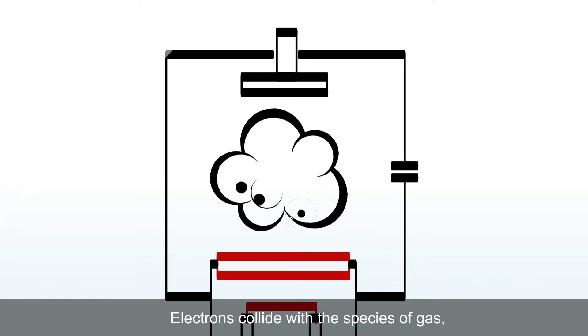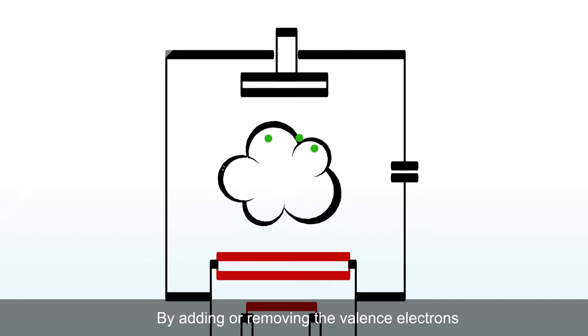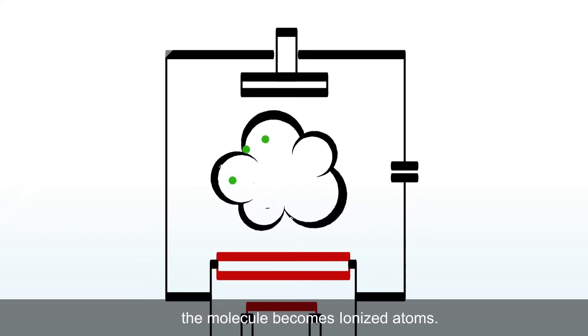Electrons collide with the species of gas or vapor, changing the composition of the molecule outer valence ring. By adding or removing the valence electrons, the molecule becomes ionized atoms.